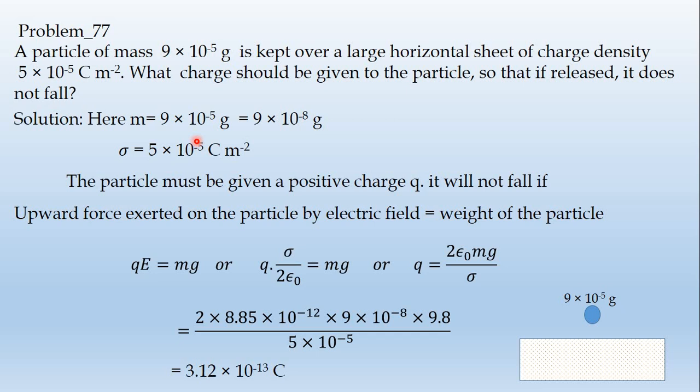First, understand the setup. One sheet with charge density 5 into 10 to the power minus 5 coulomb meter to the power minus 2. This particle has mass 9 into 10 to the power minus 5 gram. What charge should be given to the particle? The particle must be given a positive charge.